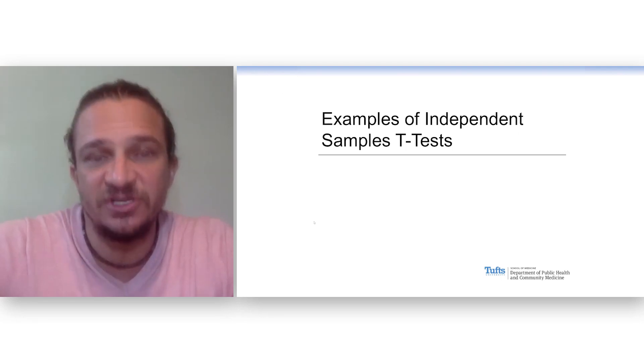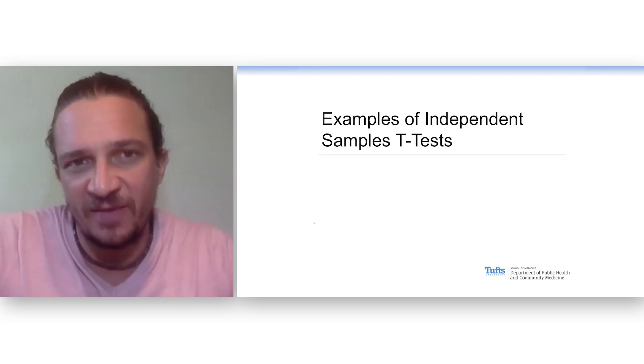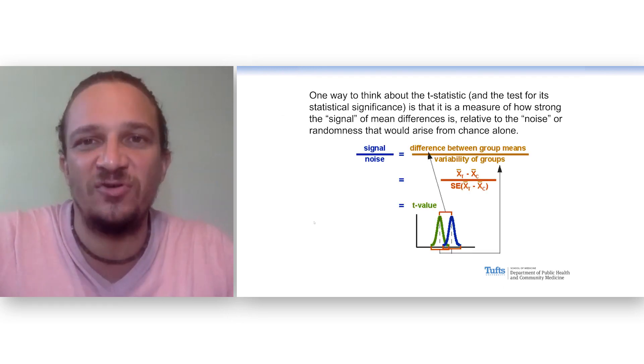Let's look at some examples of independent samples T-tests. One way to think about the T-statistic is that it's a ratio of signal to noise.